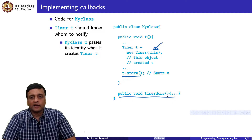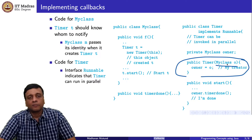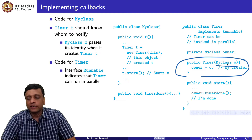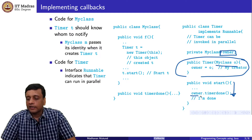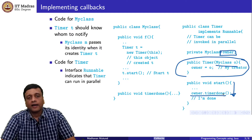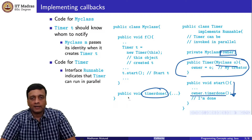If we look at the corresponding code in timer, it will have a constructor which takes as a parameter the name of the object that created it. It keeps an owner as an instance variable. Now when start finishes execution and reaches the end, it calls back this owner with the function timer done. This is part of the specification of my class that it has timer done, so therefore the timer knows it can call it back.